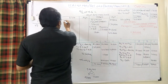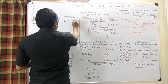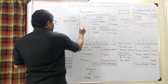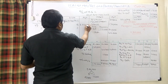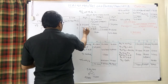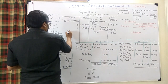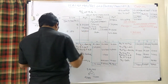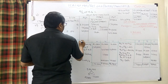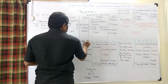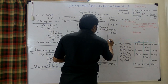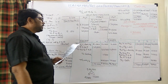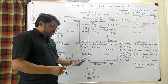Liabilities side: Capital of B = 2,25,000; Capital of C = 75,000; Sundry Creditors = 40,000 (no change). Total of the balance sheet is 3,40,000 on both sides, confirming it balances.